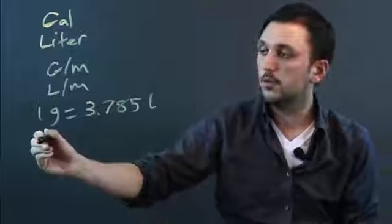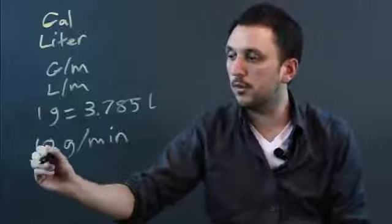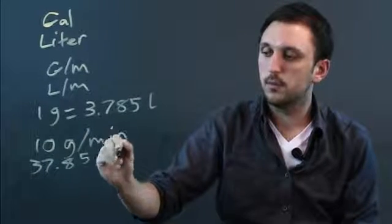So if we say, for example, 10 gallons per minute, then that's going to be 37.85 liters per minute.